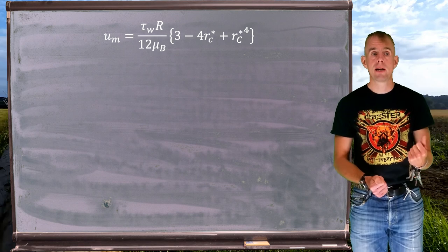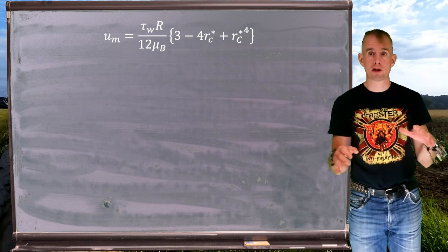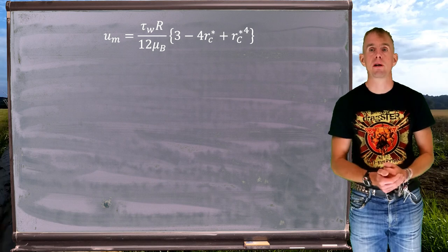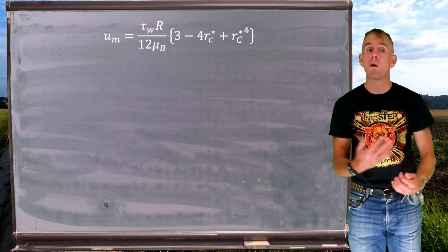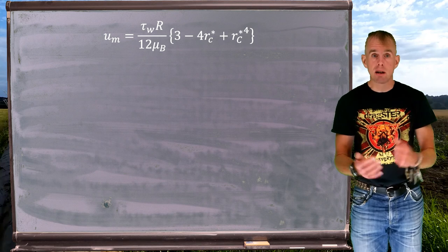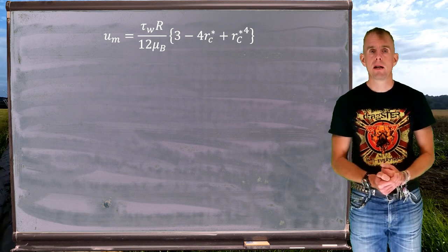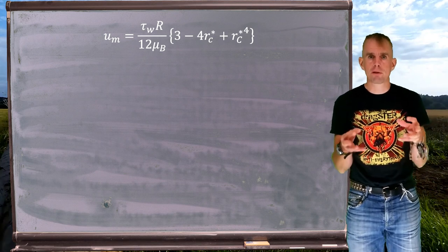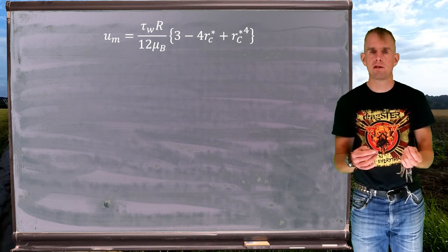The mean velocity, u_m, is a function of my wall shear stress — remember that is my datum point in a pipe flow to evaluate the shear stress or the shear rate — the pipe radius R, the Bingham viscosity μ_B, and then a group of terms that involve the non-dimensional critical radius R_C*.